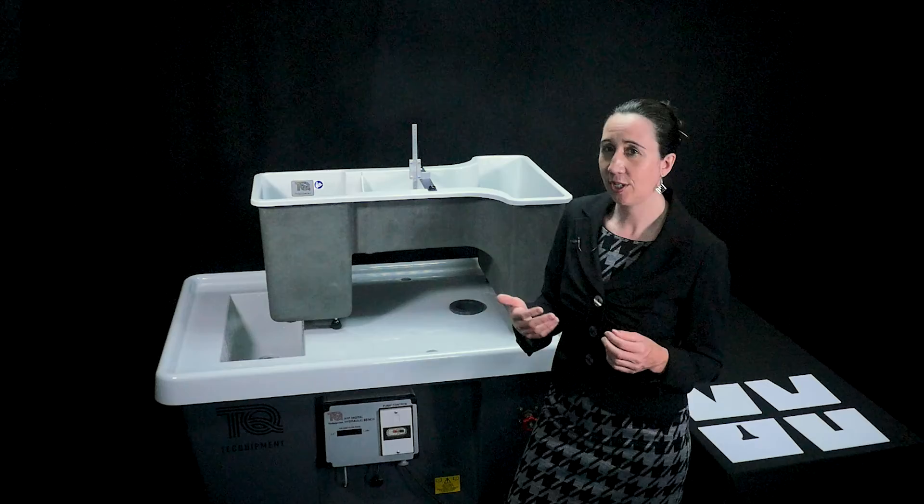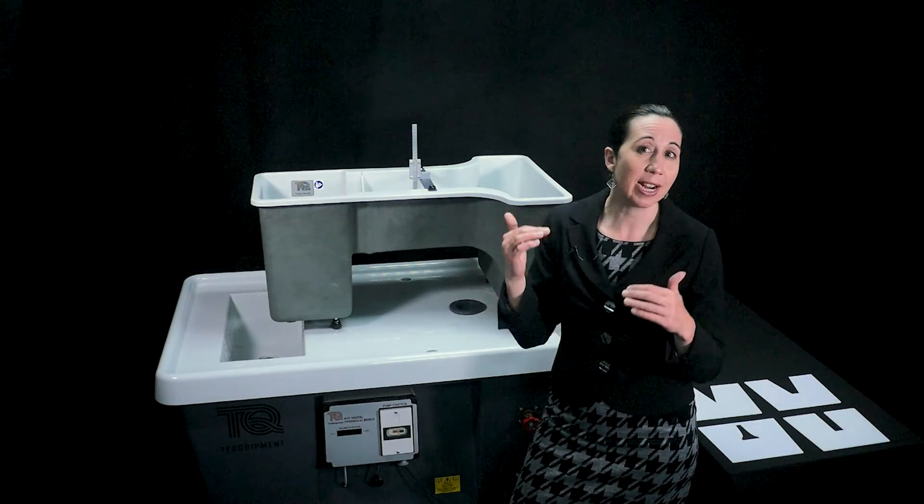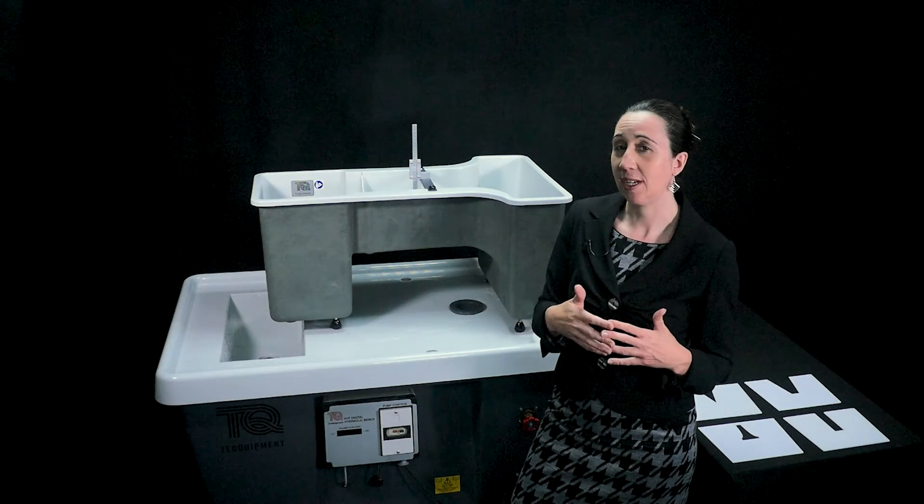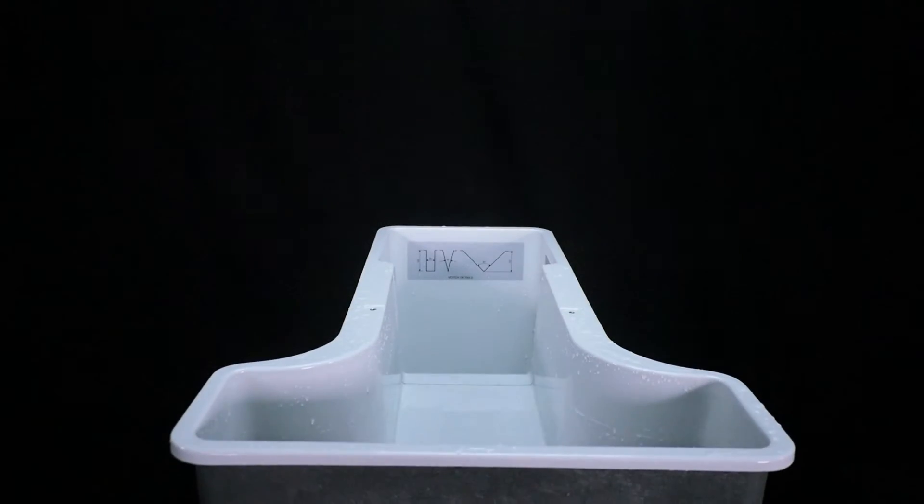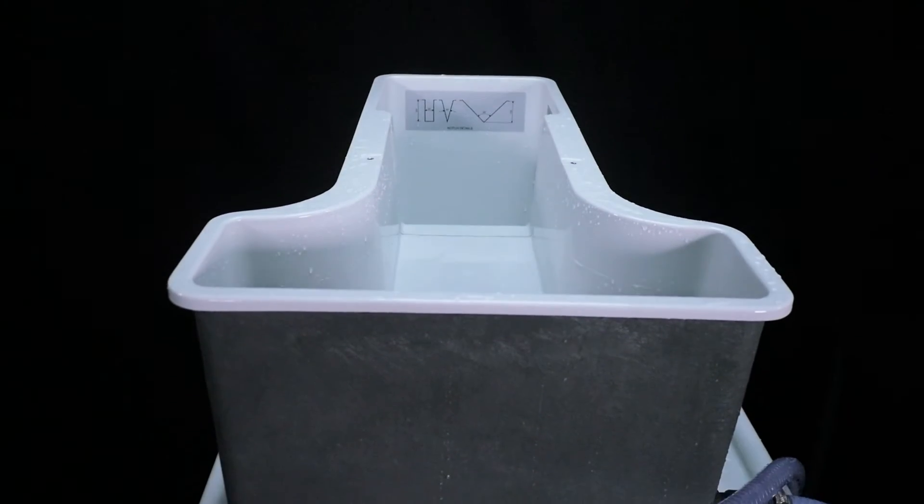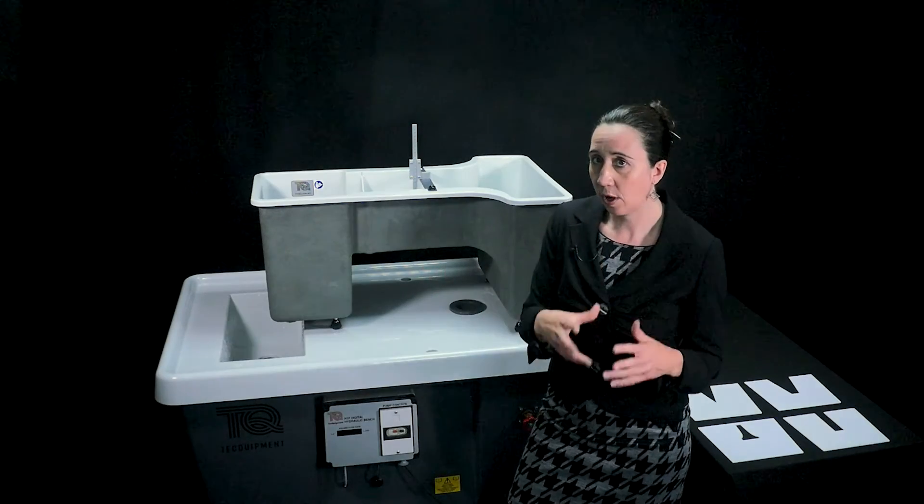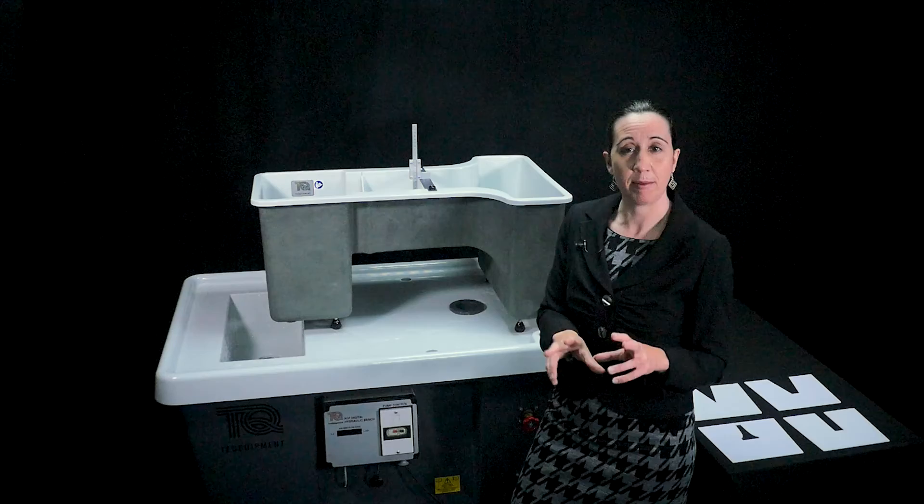The first experiment allows students to study the flow and head relationship in all of the weirs. We'll show you how to do one of these in a separate experiment video. The second experiment shows you how to calculate flow from the upstream head using the constants found in the earlier experiments.